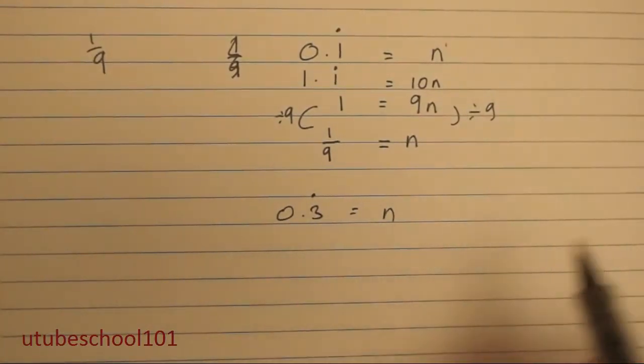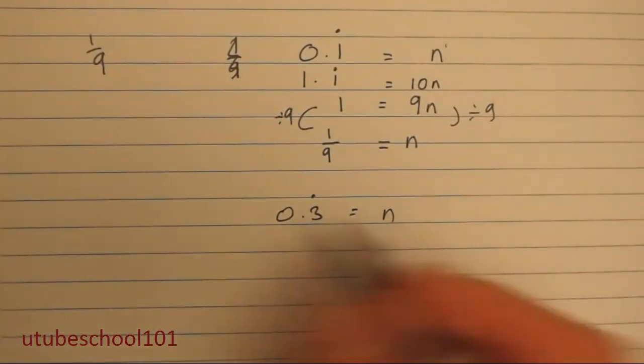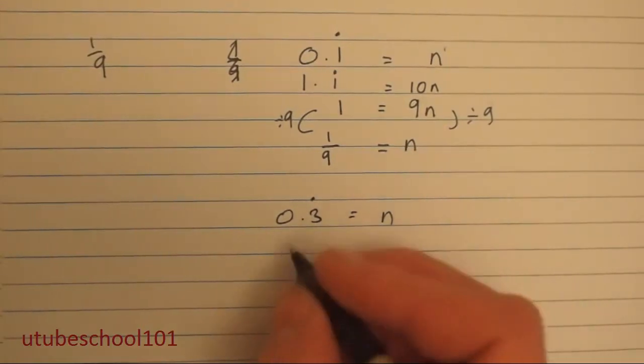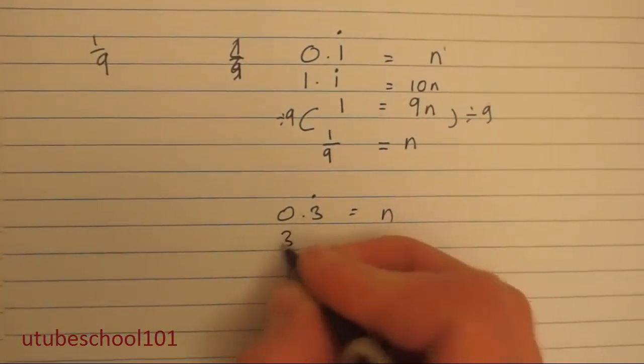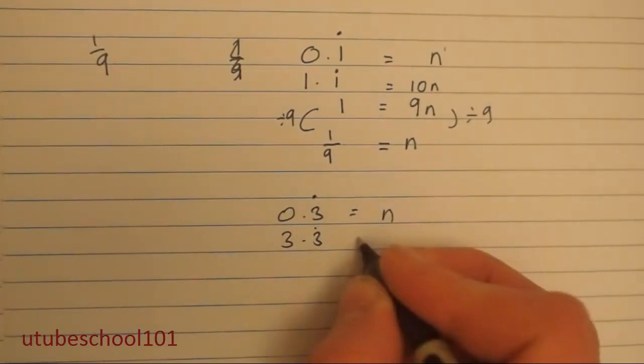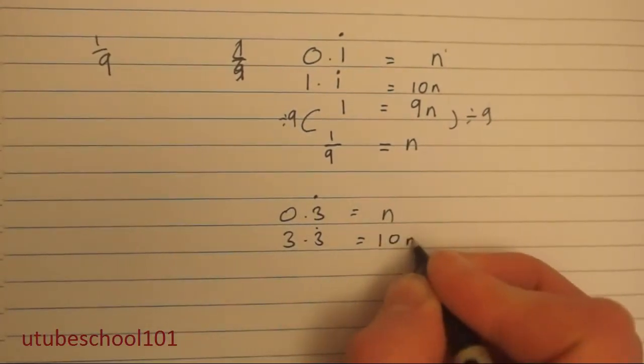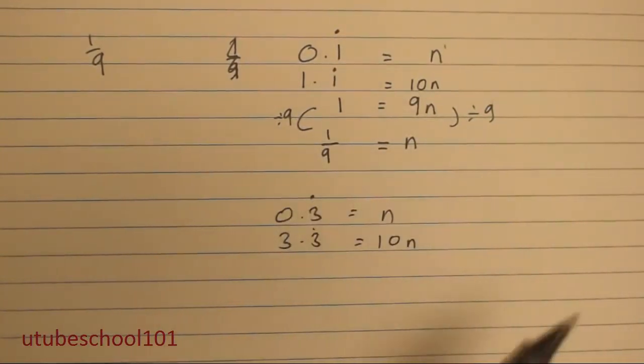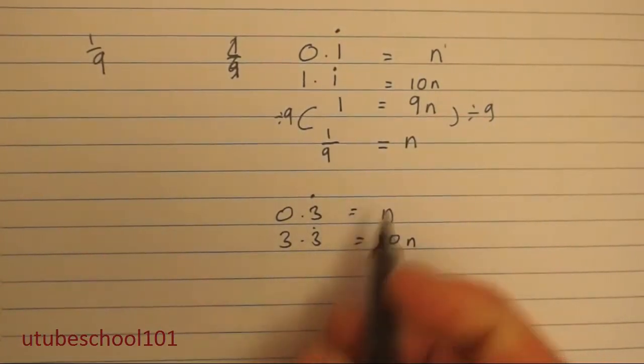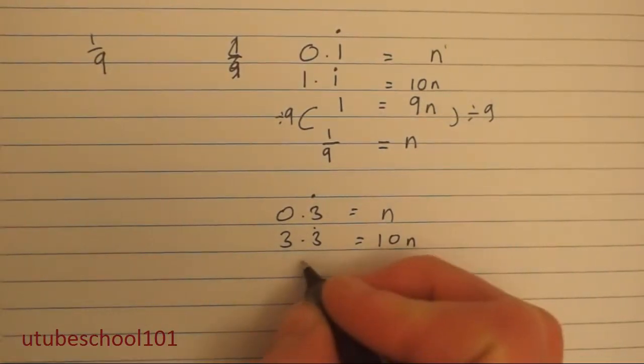So first of all we say that 0.3 recurring is equal to n. And we're going to shift this across by multiplying it by 10. So 3.3 recurring is equal to 10n. And remember we did this before, so we can line up the recurring section of this in preparation for our subtraction.